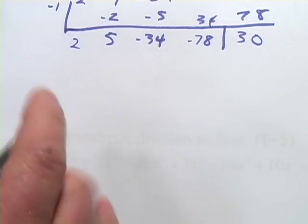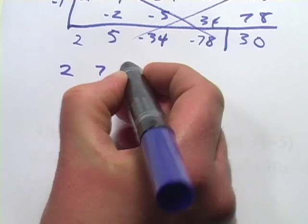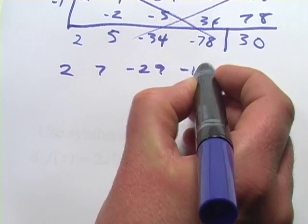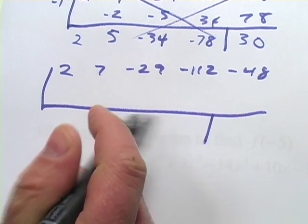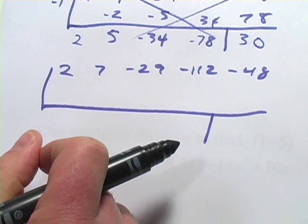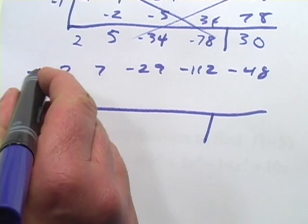So we're going to have to try this again. This one didn't work. So we'll set it up to 7, negative 29, negative 112, negative 48. Let's see.